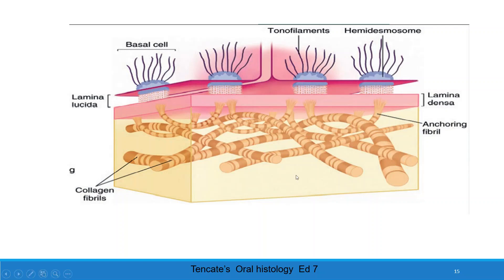Anchoring fibers are made up of type 7 collagen and are inserted into the lamina densa. Genetic defects and autoimmune diseases cause defects in the basal lamina, while in lesions of pemphigoid, separation of the epithelium takes place at the level of the lamina lucida.